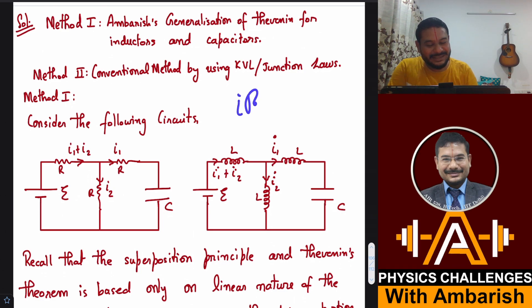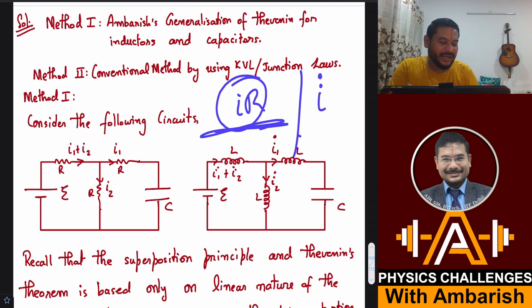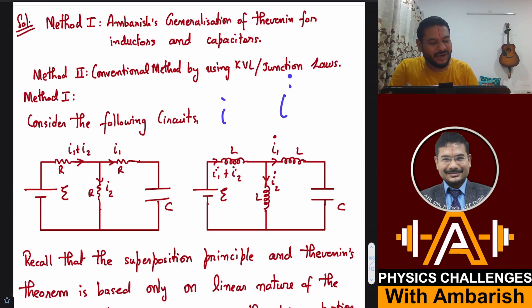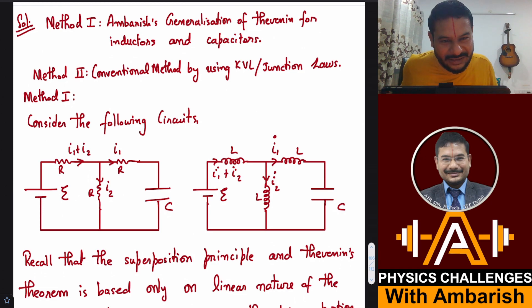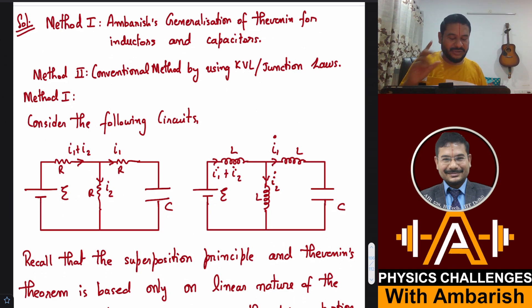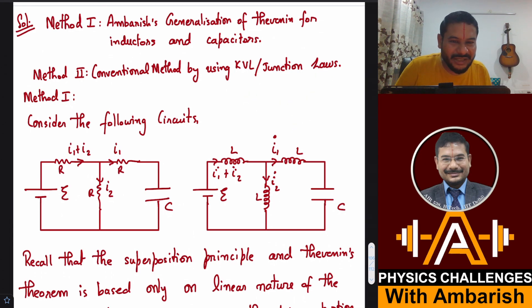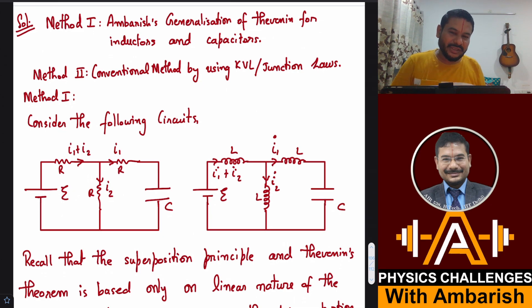The potential drop in a resistor is IR, whereas the potential drop in an inductor is L·İ, where İ represents the rate of change of current. So İ can be thought of as just another algebraic variable. If you have a circuit containing only inductors and batteries, you will get a system of linear equations in İ, inductances, and battery — just like linear equations for I, resistors, and batteries — except the variable is İ instead of I.